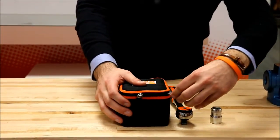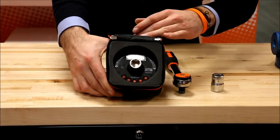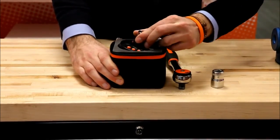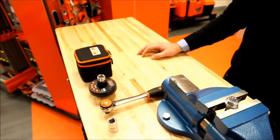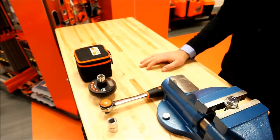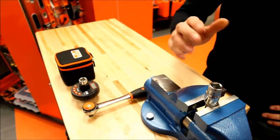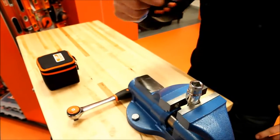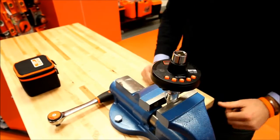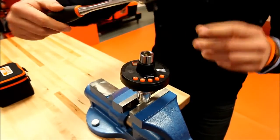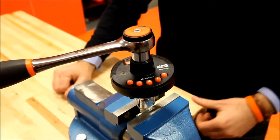If we open the case, inside we find the product, the digital torque and angle adapter. How this works is really simple. We take the socket, put it on our fastener, we take the torque and angle adapter, put it onto the socket, and finally we attach the ratchet like that. We're ready to rock and roll.